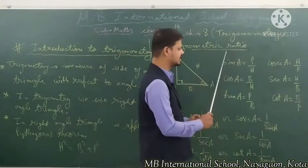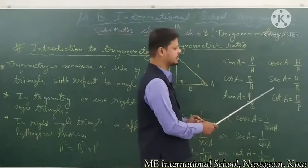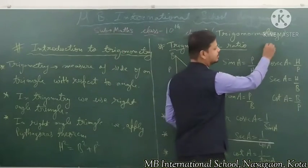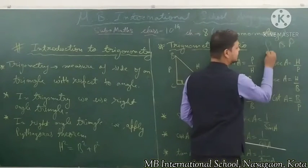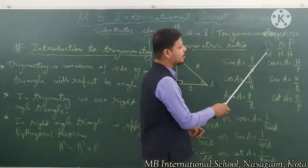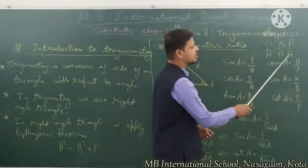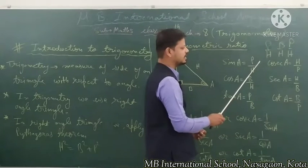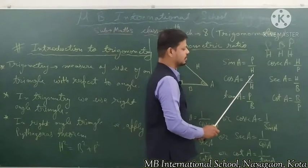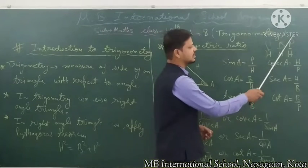The six basic ratios are sine A, cos A, tan A, cosec A, sec A, and cot A. To remember these, there is an easy trick: 'Pandit Badri Prasad Har Har Bole.' The first ratio P upon H gives sine, the second B upon H gives cos, and the third P upon B gives tan.